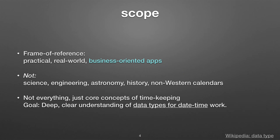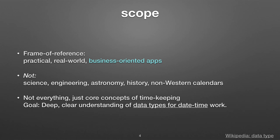What I'm going to talk about today is from the perspective of business-oriented apps — not engineering, science, or history, which have different issues. I'm also going to talk Western, Europe/US-type calendars, specifically defined by ISO standard. I'm going to talk about the data types in Postgres, but also Java, which has the industry-leading libraries for handling datetime. The concepts in that library are so well-defined that they lay out the concepts we can then map back onto Postgres types.